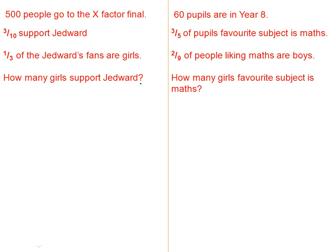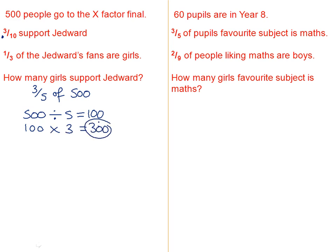So this is a two-step question. The first thing we need to do is find three-fifths of all the people, because three-fifths support Jedward. So we need to find three-fifths of 500. As we just learned, we're going to divide by the bottom number — we take our 500 and divide by 5. That gives us 100. And then we take our 100 and we times it by the top number, times it by 3. That will give us 300. So there are 300 Jedward fans.